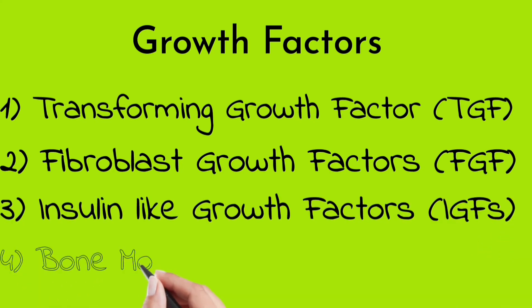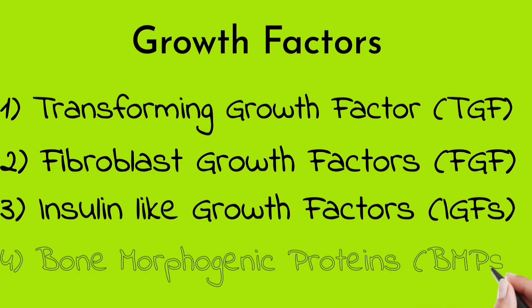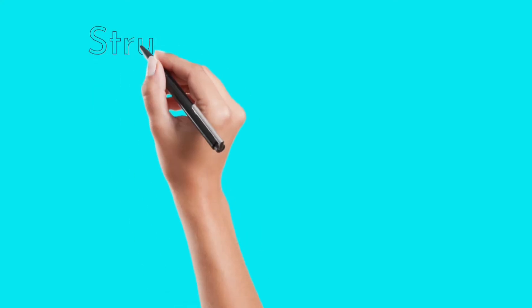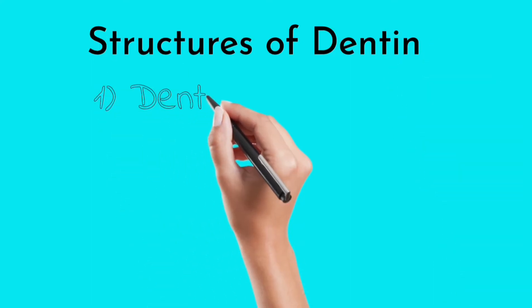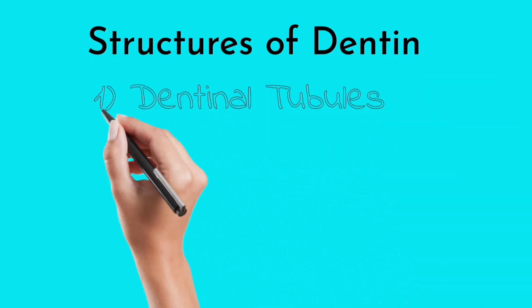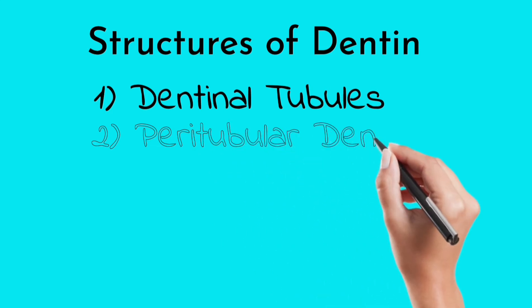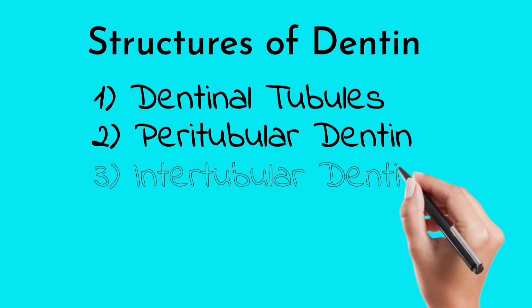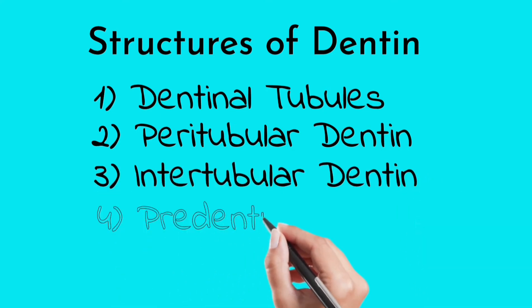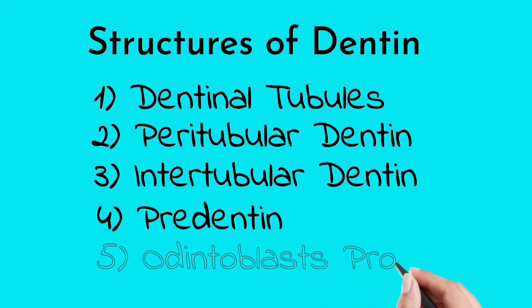The next topic is the structures of dentine. There are mainly five structures: first, dentinal tubules; second, peritubular or intratubular dentine; third, intertubular dentine; fourth, pre-dentine; and fifth, the odontoblastic process. We will study each in detail.